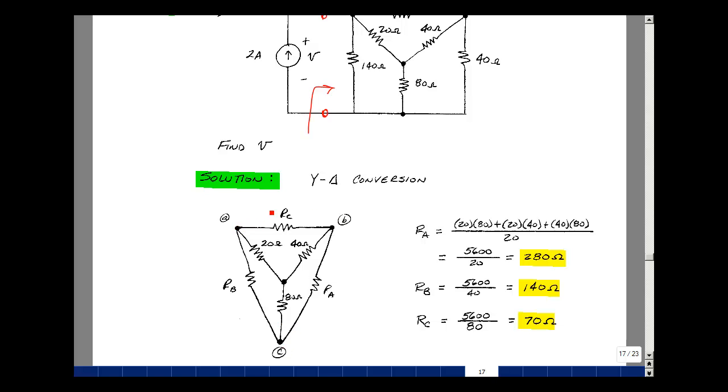Then my delta is between A and B, A and C, and B and C. The resistor R sub A in my delta is across from node A, the resistor R sub B is across from node B, and the resistor R sub C is across from node C.